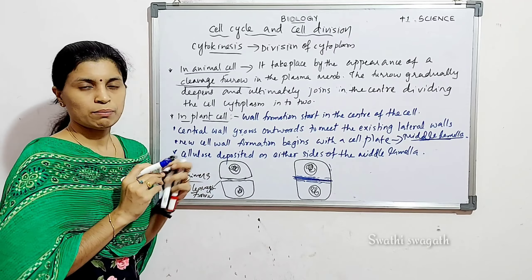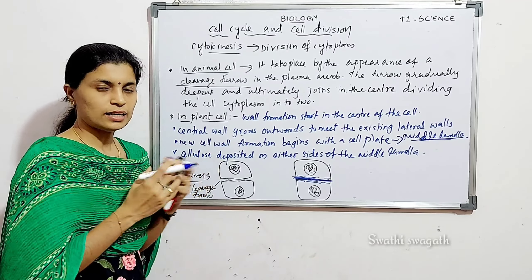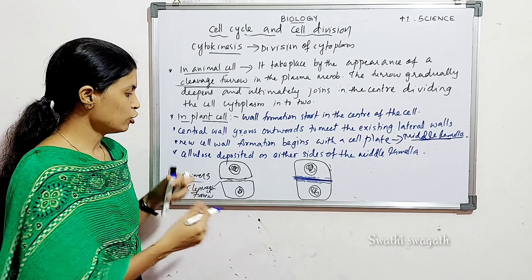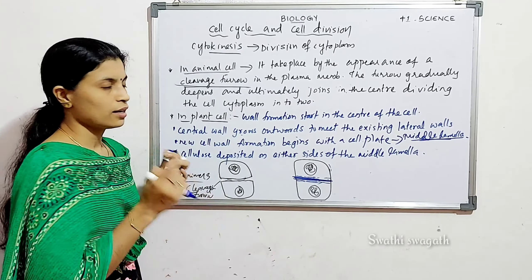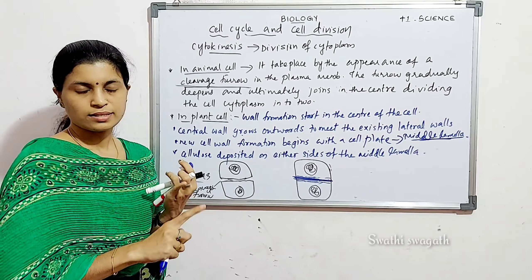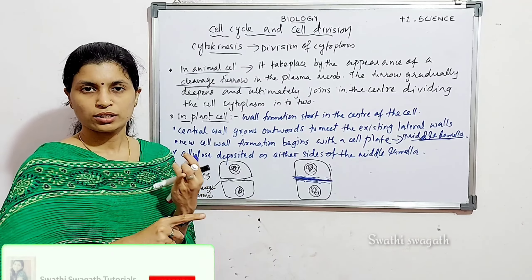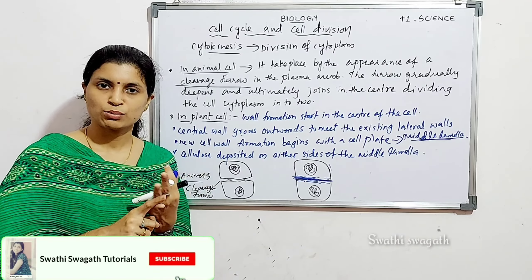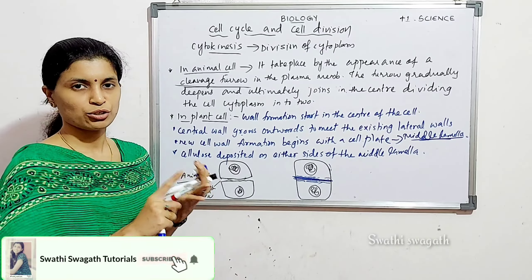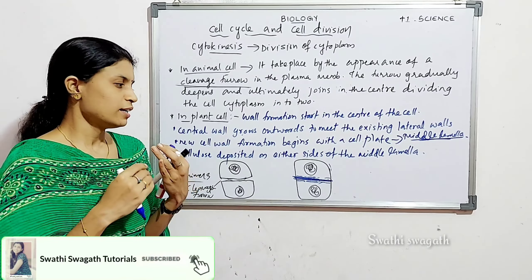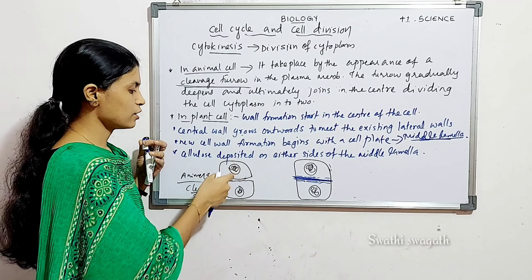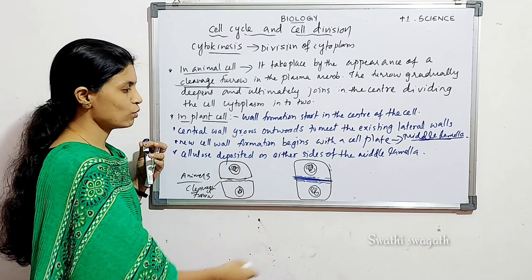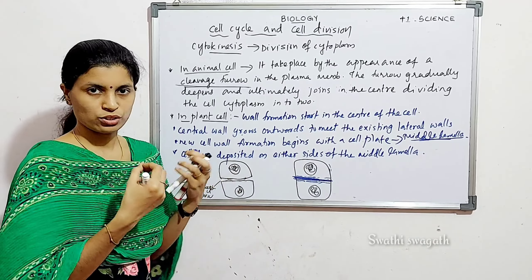After division in both plant cells and animal cells, other cell organelles like Golgi complex, endoplasmic reticulum, and mitochondria are equally distributed into the two daughter cytoplasm cells.